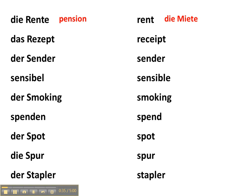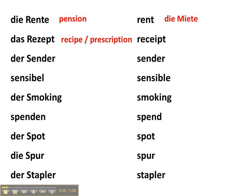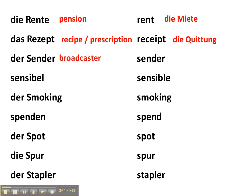Das Rezept in German is a recipe or a prescription. But in English we have the word receipt, and the P is now pronounced — die Quittung in German, which is an actual written recognition of something you bought or paid for.